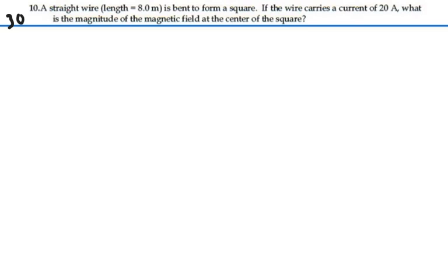Here's problem 3010. A straight wire length 8 meters is bent to form a square. If the wire carries a current of 20 amps, what is the magnitude of the magnetic field at the center of the square?